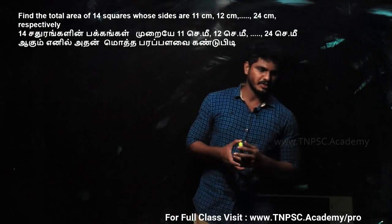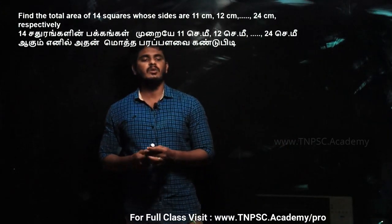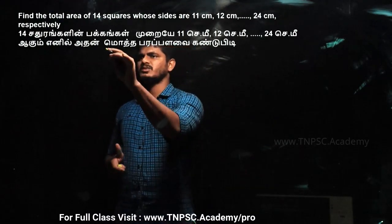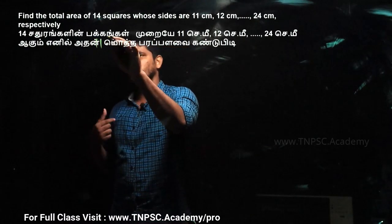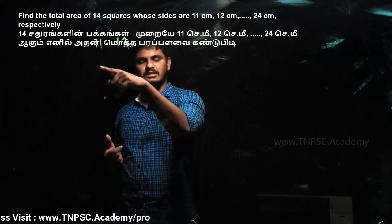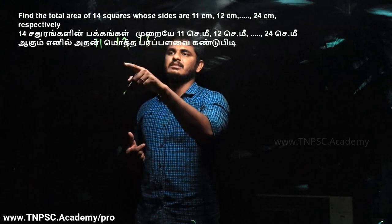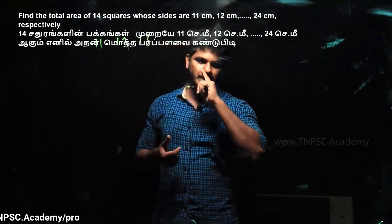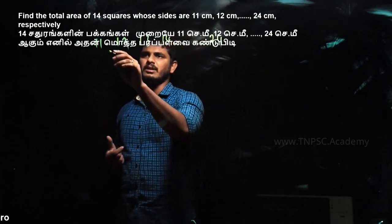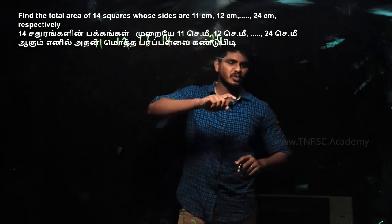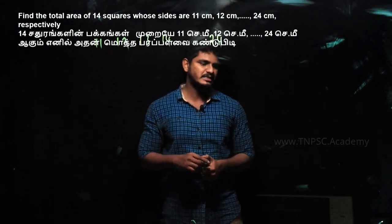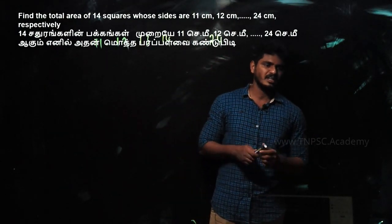That is the first square. So there are 14 squares. For example, there are 11 squares. The square is 11 cm, the other side is 12 cm, 13 cm, 14 cm. That is the point till 24 cm. So the total area of 14 squares is the sum, the total area of 14 cm.